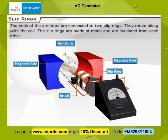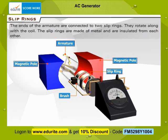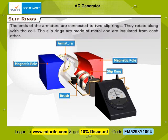Slip rings: The ends of the armature are connected to two slip rings. They rotate along with the coil. The slip rings are made of metal and are insulated from each other.